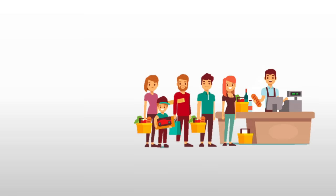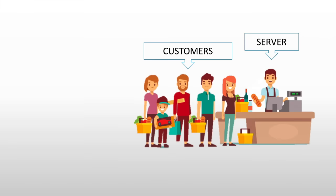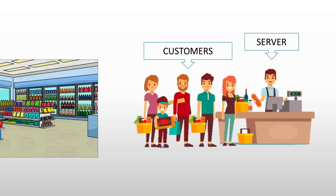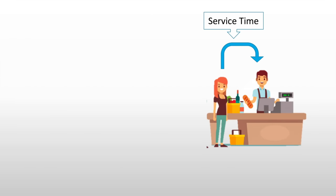Let's try an example. For example, you are paying in a grocery store. You have a server and you have the different customers. The grocery store — the place where you bought your food — would be your source of the line or the source of customers. The service time would be the amount of time that the cashier or the person at the point-of-sale system would take to service you, basically.